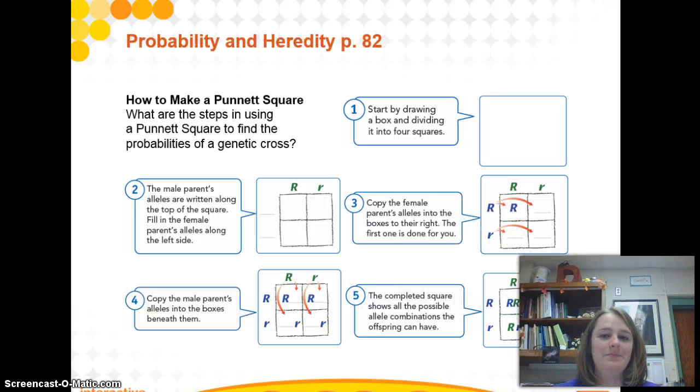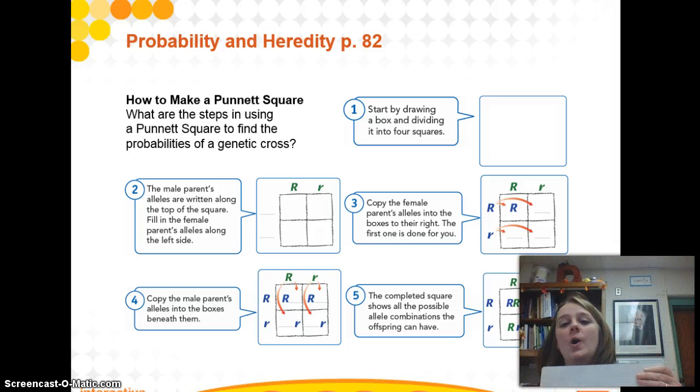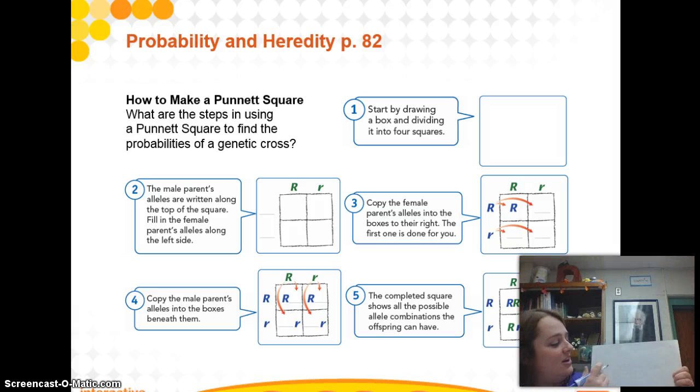So how exactly does one do a Punnett square? Lucky for you, I have a whiteboard of science. Okay, so one will start by drawing a box, dividing that box into four equal boxes.